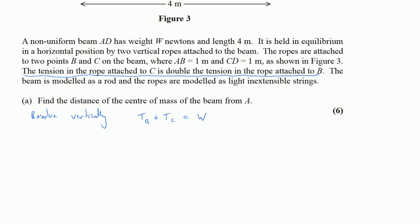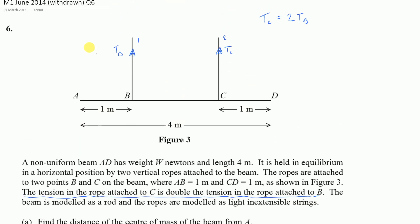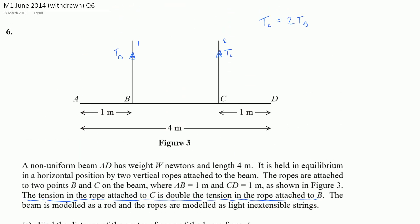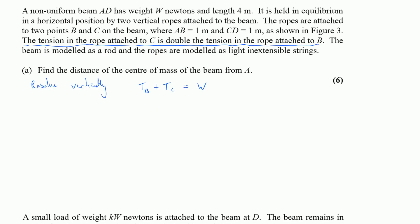Now I do have another way of writing this, because as we established earlier, the tension at C is just twice the tension at B. So I could write this as the tension at B plus twice the tension at B is equal to W, or three lots of the tension at B is equal to W.